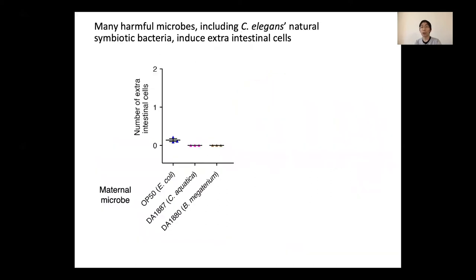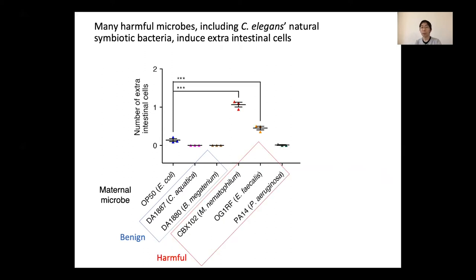In this experiment, mother worms were cultured with various microbes, and the number of extra intestinal cells in the progeny was counted. The y-axis shows the number of extra intestinal cells, and each dot represents a mean from one experiment. E. coli OP50, the standard food for C. elegans in lab culture but weakly toxic, had a slight activity to induce extra intestinal cells. No extra intestinal cell was observed on more benign bacteria. In contrast, we found some harmful microbes such as M. nematophilum and E. fecalis strongly induced extra intestinal cells.